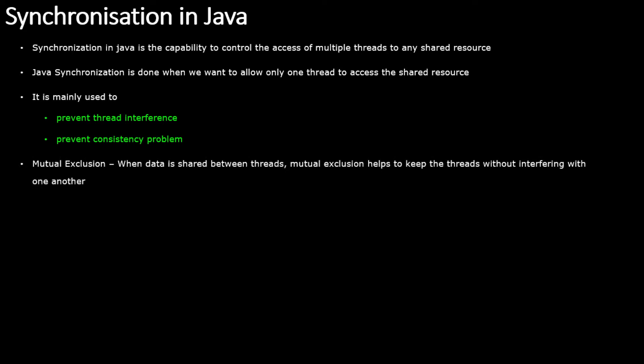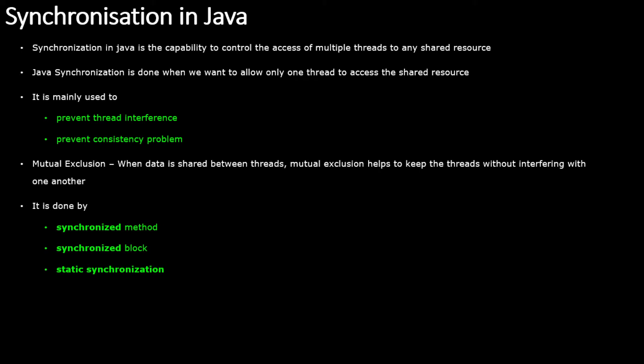To make this happen, we create a concept called mutual exclusion. When data is shared between threads, mutual exclusion keeps threads from interfering with one another. To implement mutual exclusion in your program, we use three different concepts: the synchronized method, the synchronized block, and static synchronization. We will see these with the help of a small program.